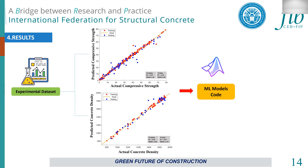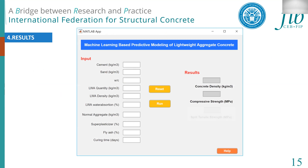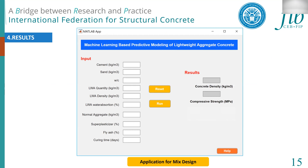After validating the machine learning models, the best ML model code was extracted and a graphical user interface application was designed. This application is very useful in that a person who does not know machine learning can simply input values — cement, sand, water-to-cement ratio, water quantity, lightweight aggregate quantity and density — press run, and learn the density and strength of their lightweight concrete. Using these techniques, we can help the construction industry produce better quality concrete and make the mix design process very easy.